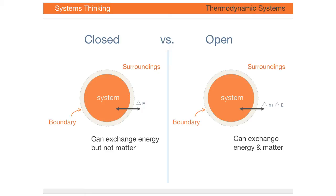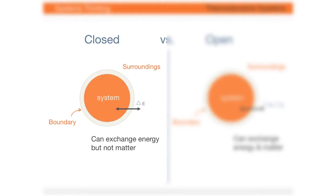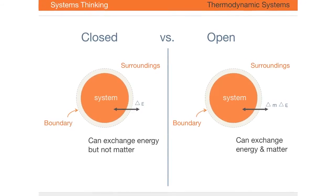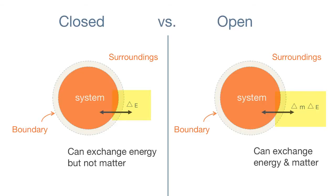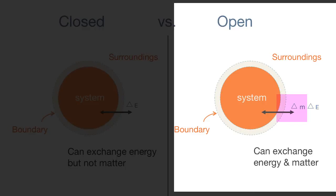This slide depicts two types of thermodynamic systems, closed systems and open systems. As you can see, both of these systems can exchange energy with their surroundings. However, only open systems can exchange matter with the surroundings.